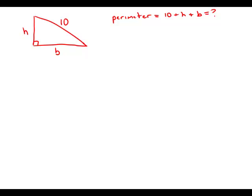First of all, in order to find the perimeter we need to find both b the base and h the height. Notice we already have one equation relating these three quantities, namely the Pythagorean theorem, which tells us that h squared plus b squared equals 10 squared which is 100. So right now we have one equation with two unknowns.